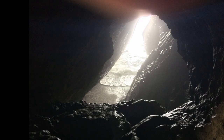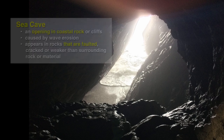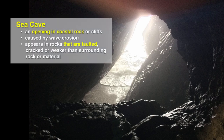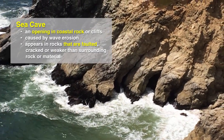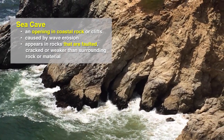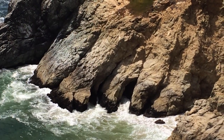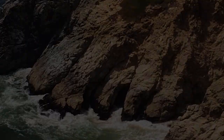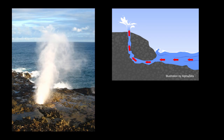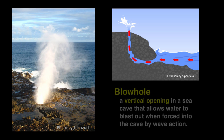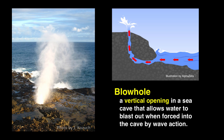Another feature we might see is a sea cave. This is just an opening in the coastal rocks or cliff caused by wave and wind erosion, usually in rocks that are faulted or weaker than the surrounding rock or material. Some sea caves can work their way into a vertical opening that we call a blowhole. This can allow water to escape as a spout when a wave comes bursting into the cave, and it looks pretty similar to the spouting of a whale.